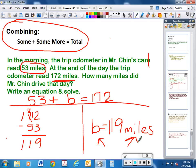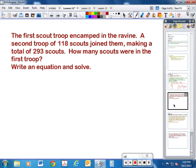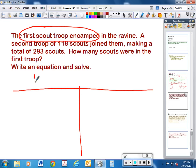All right. Now in your notes, underneath where you had the some plus some more, I want you to do this one. The first scout troop encamped in the ravine. A second troop of 118 scouts joined them, making a total of 293 scouts. How many scouts were in the first troop? Write an equation and solve. So again, we're going to look—do you know the some? You don't know the first one. It just said the first scout troop, it doesn't tell how many there were, so that's going to be your letter. Plus the second one, the some more, was 118, and you know the grand total was 293. I would like you to write that in your notebook and then go ahead and solve it, and write your answer on the right-hand side with a label.